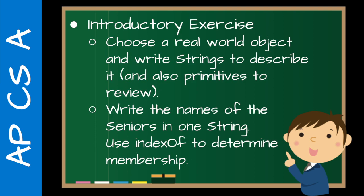A quick introductory exercise: just like we did with primitives, choose a real-world object and write some strings to describe it, along with primitives to review. For example, for a mobile phone: String caseColor = "green". How can we describe objects using strings, not just numbers? Another exercise: write the names of seniors in one string — "Bob Sue Jason" — inside a string called seniors.